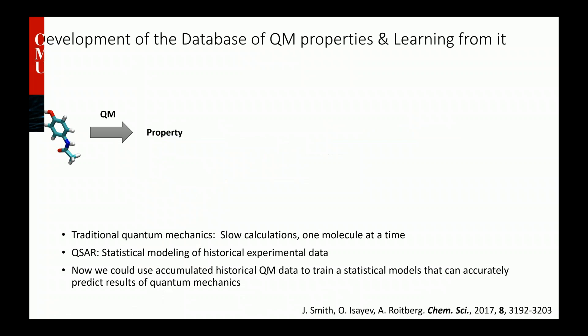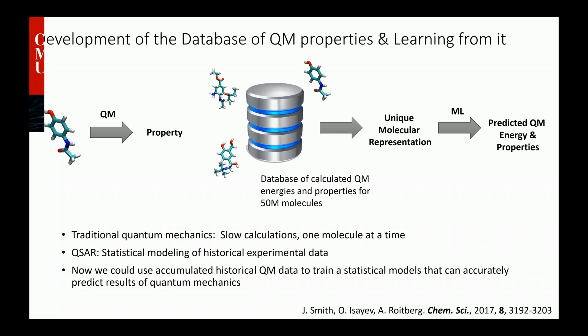Because of the compute expense, quantum mechanics is typically perceived as slow and sequential — you take one molecule at a time, compute geometry and properties. However, we can learn a lot from statistical models and machine learning. Over the years, Adrian and I accumulated a gigantic database of energies and properties for over 50 million organic molecules. It's a unique resource that allows us to mine this knowledge. Combined with a particular way to represent molecules for machine learning, we can predict quantum mechanical energy, properties, and so forth. This is what I will show you in my talk today.